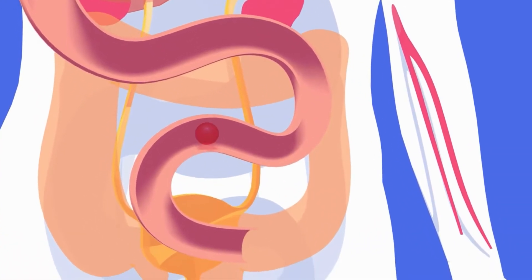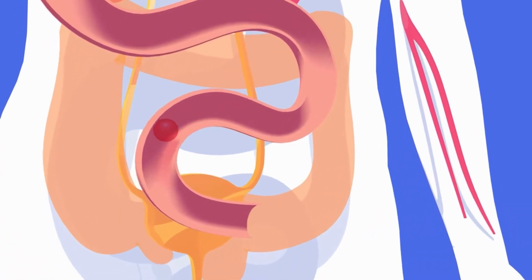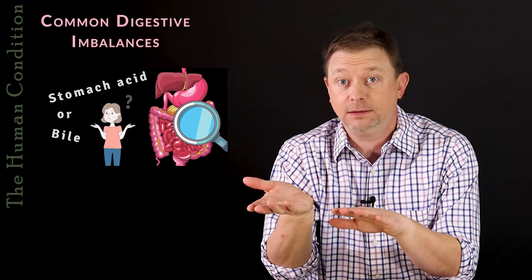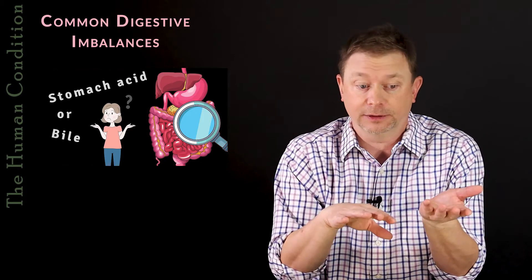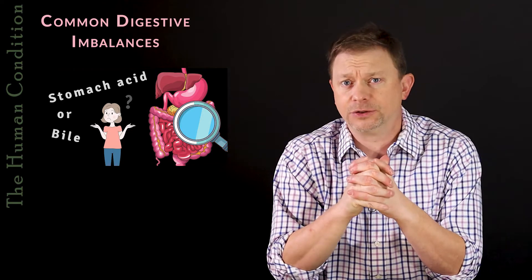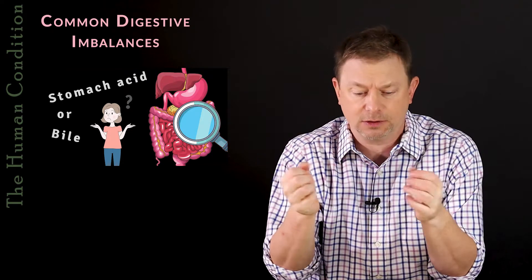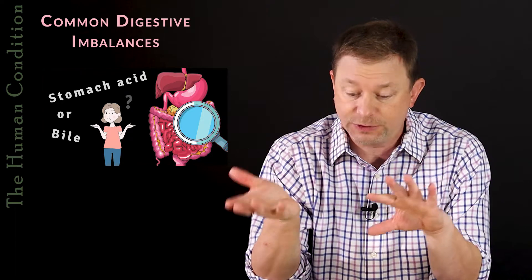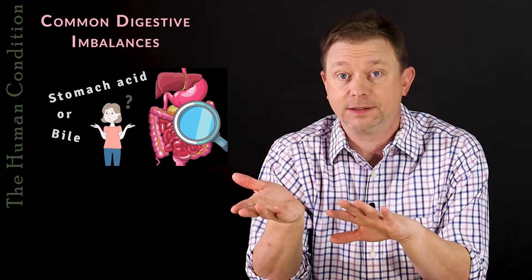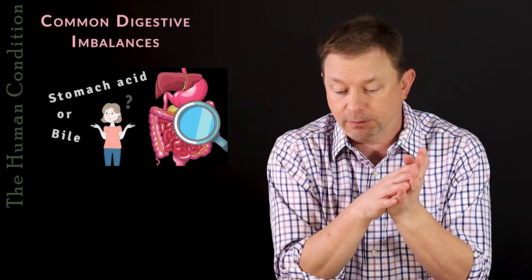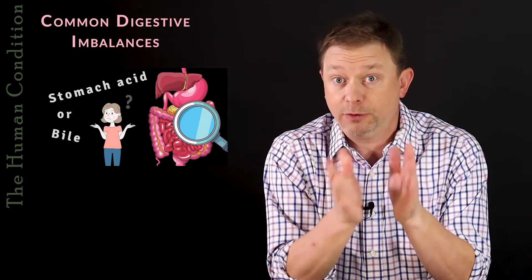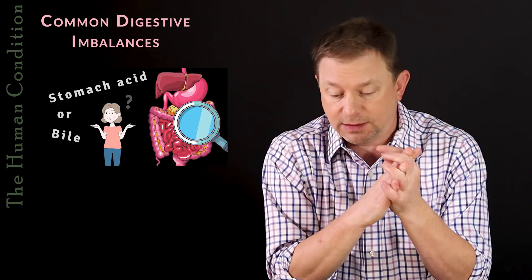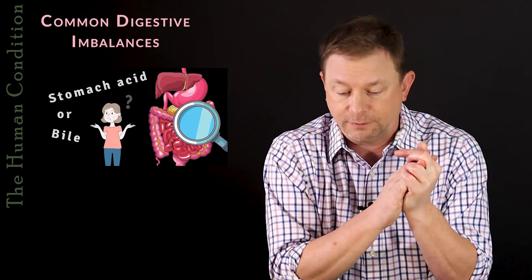The small intestine will receive bile from the gallbladder and completely switch over its pH from very acid to very alkaline. That happens in a short section about 10 inches long — switching from highly acidic to highly alkaline very, very quickly. It's supposed to be a very chemically violent process that is quite aggressive.